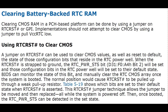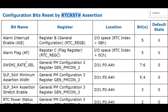BIOS will first consider the Motorola chip and manually clear the RTC CMOS array. Once the system is booted, the normal position would cause RTC_RST# to be pulled up through a weak pull-up resistor. The particular table shows which bits are set to their default state when RTC_RST# is asserted. This RTC_RST# jumper technique allows the jumper to be moved and then replaced while the system is powered off — that jumper used in desktops. Once booted, the RTC_PWR_STS can be detected in the set state.